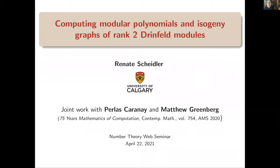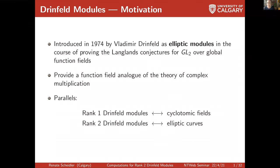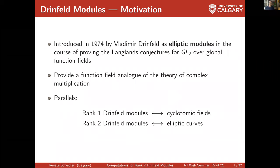So if you're very familiar with Drinfeld modules, take a snooze for the first little while. Drinfeld modules were introduced in 1974 by Vladimir Drinfeld, who's a researcher at the University of Chicago. He didn't call them Drinfeld modules; he called them elliptic modules. He introduced them in the course of proving the Langlands conjectures for GL2 over global function fields, and the aim was to have some function field analog of the theory of complex multiplication. The rank two Drinfeld modules in particular bear close similarities with sister objects in the world of number fields. The rank one Drinfeld modules are very similar to cyclotomic fields, and the rank two Drinfeld modules are the function field analog of elliptic curves.